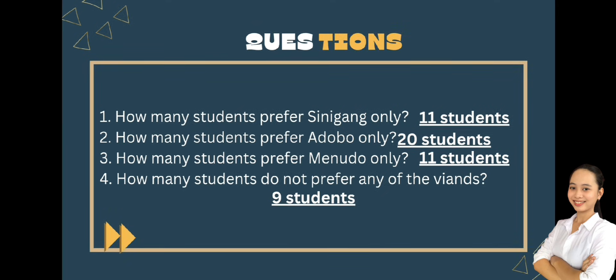So ngayon naman, sasagutin natin yung mga question. How many students prefer Sinigang only? Based on our Venn diagram, 11 students. How many students prefer Adobo only? 20 students. How many students prefer Menudo only? 11 students. How many students do not prefer any of the bayans? 9 students. And that would be all for our solving using Venn diagram.